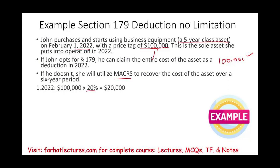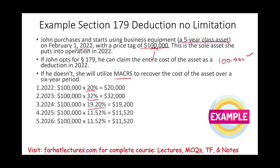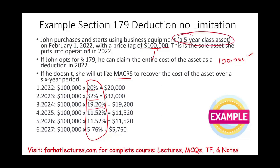Under MACRS for a five-year class half-year convention, the depreciation percentages are: Year 1: 20%, Year 2: 32%, Year 3: 19.2%, Year 4: 11.52%, Year 5: 11.52%, Year 6: 5.76%. If you don't know where these percentages come from, go to the MACRS half-year convention lesson. You should not be able to understand Section 179 without understanding MACRS.